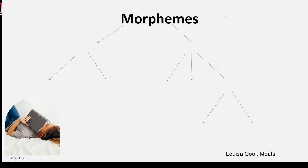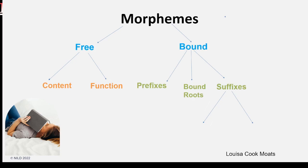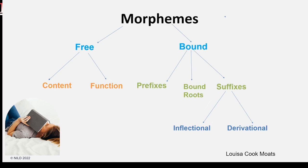Knowing this helps us understand why it is important to take a deeper look at different types of morphemes. First, free morphemes — these stand alone as words and do not have to be combined with other morphemes. Examples are the words 'woman' or 'elephant.' Free morphemes can be content or function words. Content words include nouns, verbs, adjectives, and adverbs. Function words include conjunctions, prepositions, pronouns, auxiliary verbs, and articles — the grammatical glue of sentences.